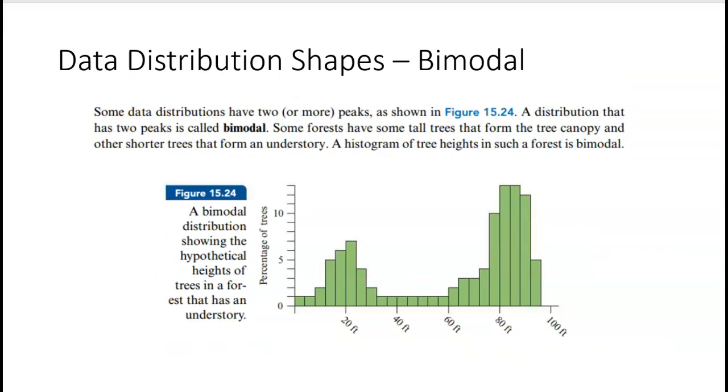We can have bimodal data. If you think about kind of breaking this up, bi meaning two, think about a bicycle, modal meaning our mode. That's what a bimodal is going to look like. It's going to have two or more peaks, and those peaks kind of represent the most. We can see we've got a lot here and a lot here, and that's going to make this data bimodal.